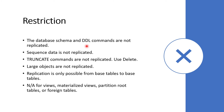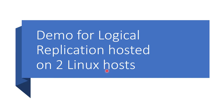Sequence data is not replicated from publisher to subscriber. If you run a TRUNCATE command, it is not replicated to the subscriber — instead you can use the DELETE command if possible. Large object replication is not allowed. Replication is only possible from base table to base table, meaning views, materialized views, partition root tables, and foreign tables cannot be replicated.